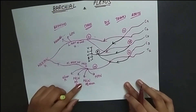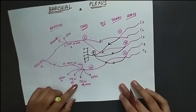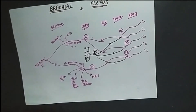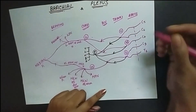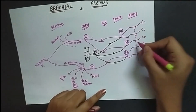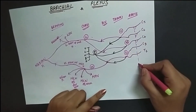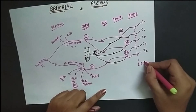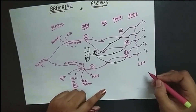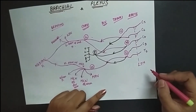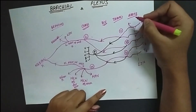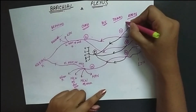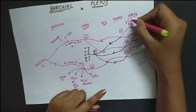Two more nerves arise which I have not mentioned before. One nerve passes throughout from C5, C6, and C7 — that is the long thoracic nerve, or the nerve to the serratus anterior muscle. Another nerve arises from C5 — that is the dorsal scapular nerve.